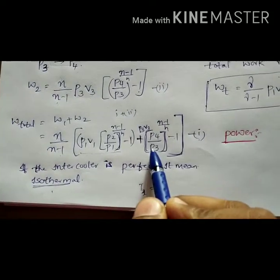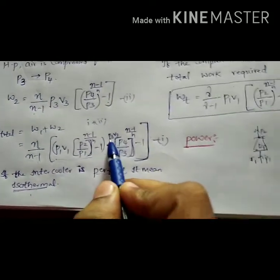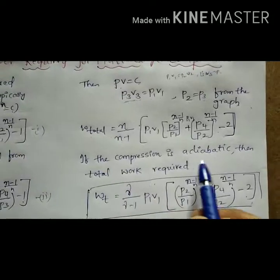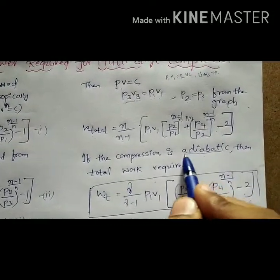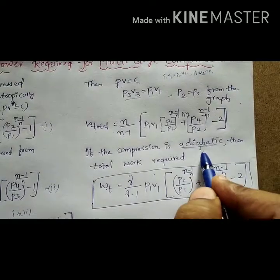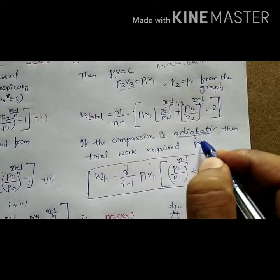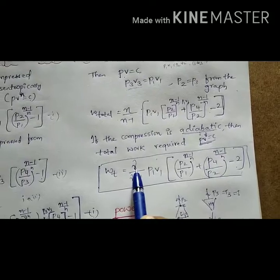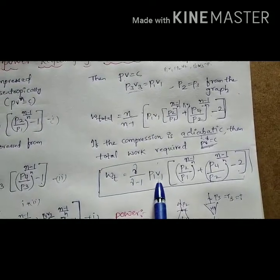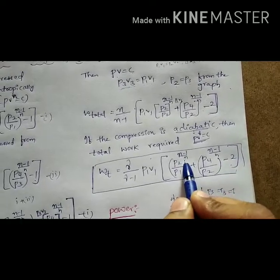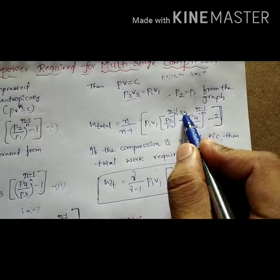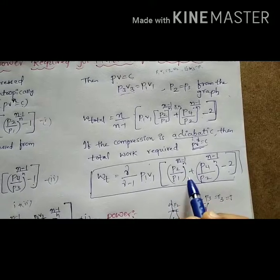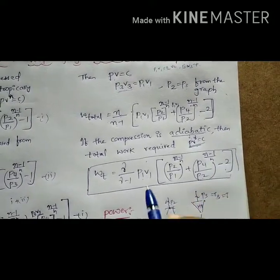If the intercooler is not perfect, we do not substitute P3V3 = P1V1 and we keep P4 and P3 as they are. If the compression is adiabatic — meaning no heat addition and no heat outgoing — the equation is PV^γ = constant. Substituting γ in place of n: W_total = (γ/(γ−1)) × P1V1 × [(P2/P1)^((n−1)/n) + (P4/P2)^((n−1)/n) − 2].